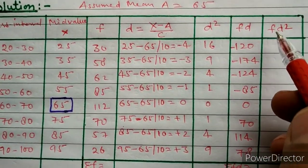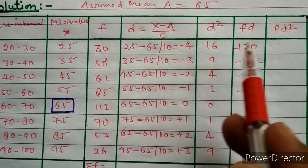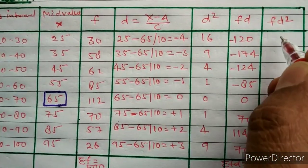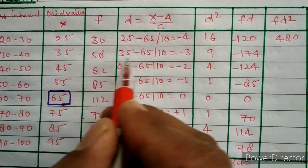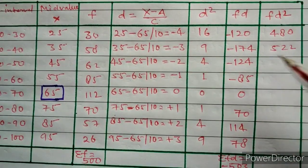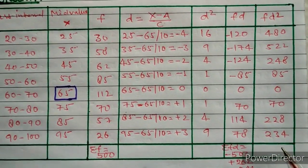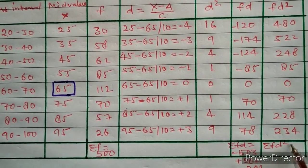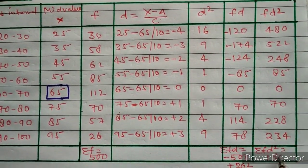In the last column of the table we calculate fd². To calculate fd², we multiply the frequency by d². Here 30 into 16 gives 480, and 58 into 9 gives 522. Similarly we calculate fd² for all remaining values. Finally we sum all these values to get sigma fd², which equals 1867.